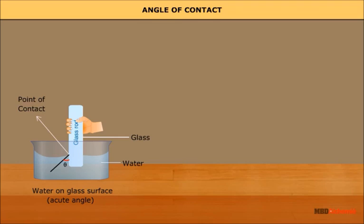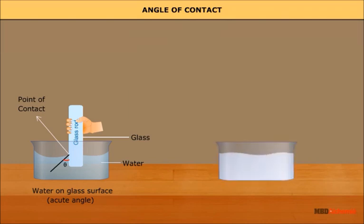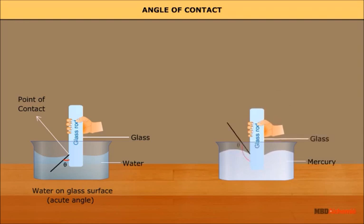Water on an oily surface or wax, and mercury on glass, are examples where the angle of contact is obtuse. Case 2: when S_SA is greater than S_SL, cos(theta) is positive, meaning theta is less than 90 degrees — an acute angle. This is the case of a water-plastic or water-glass interface, where liquid molecules are attracted more strongly to the solid molecules than to themselves.